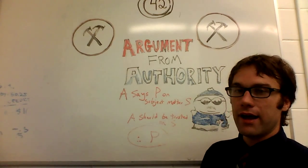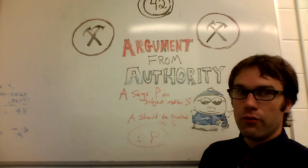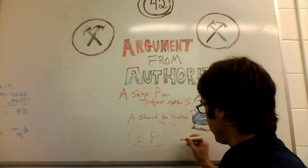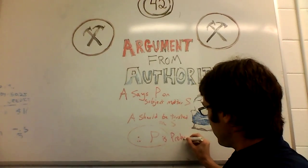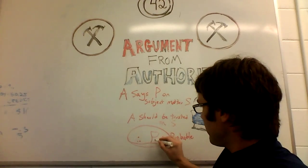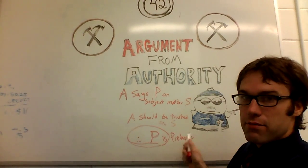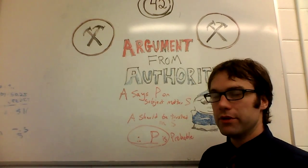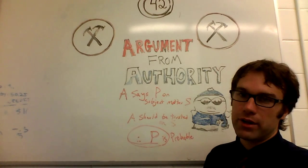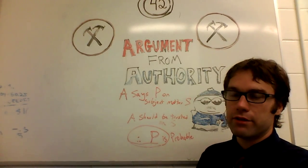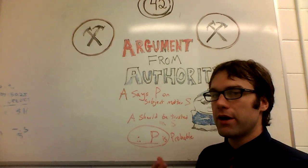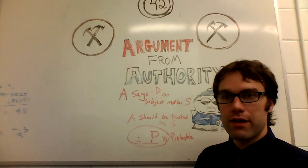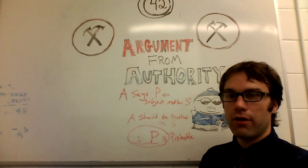Now this isn't actually a completely valid way of arguing. What should be here instead of P being true is P is probable. This is kind of a subtle point, because we rely on experts all the time. Whenever you're deferring to an expert, you're doing so in a way that is contingent upon their credibility, that is not necessarily true, but true as far as you can basically tell.